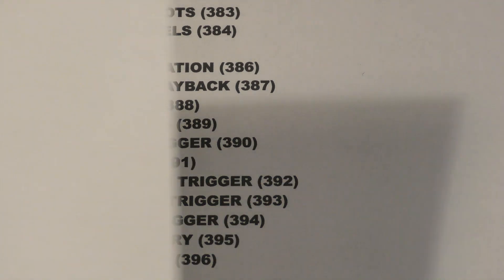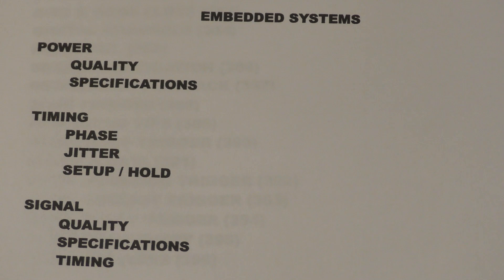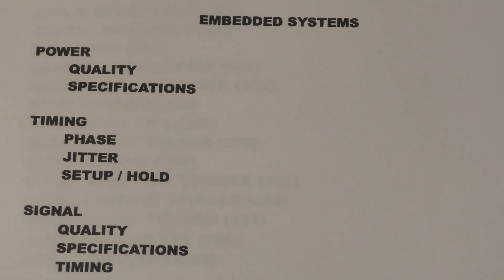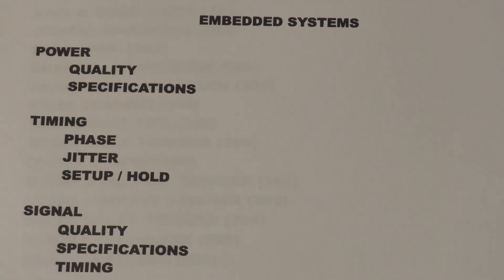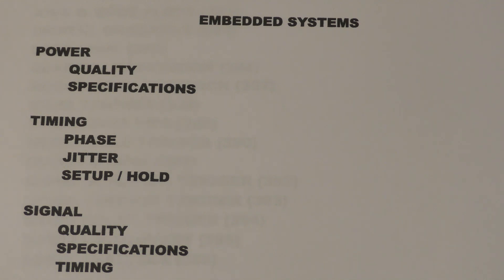We're going to talk about the set of issues that we have previously covered, as a kind of synopsis of where we've been. When we looked at embedded systems, we talked about, in my opinion, the place to start when you're trying to debug an embedded system. In other words, you have a design — maybe your design and maybe somebody else's — that you're trying to get to work. And for some reason it's not quite working. So where do you start?